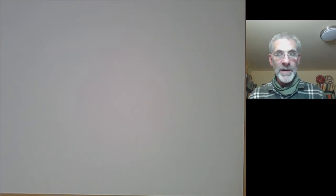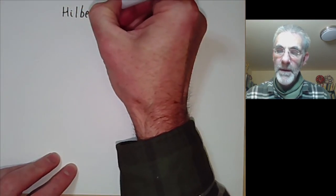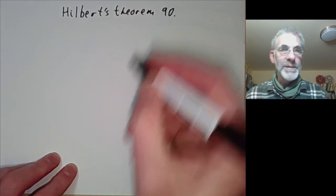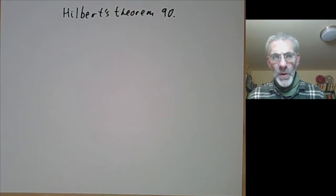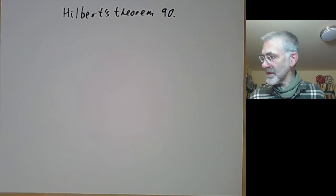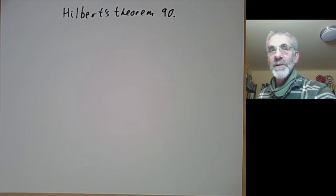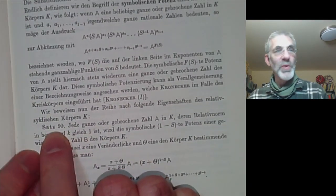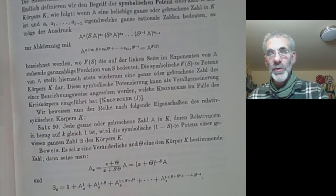This lecture is part of an online course on Galois theory and will be about Hilbert's Theorem 90. The reason it's called Hilbert's Theorem 90 is that it is Hilbert's Theorem 90. Hilbert wrote a famous report on the theory of algebraic numbers back in the 19th century, and one of the theorems in his report, Theorem 90, is exactly the theorem we're going to talk about.